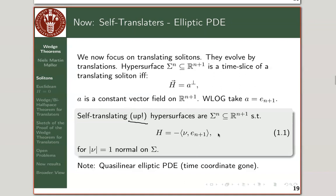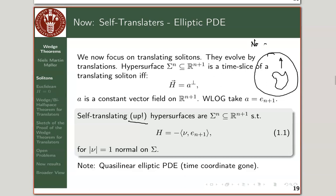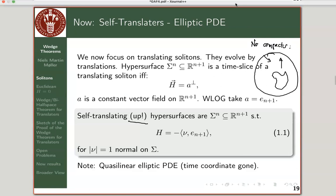A lot of the local theory is pretty well understood. What we'd like to look at is the global geometry of solutions — complete hypersurfaces satisfying this equation. It's not hard to see you cannot have any compact examples of self-translating hypersurfaces. To show this, take your compact supposed self-translator, put a sphere around it, and use the avoidance principle — it would have to translate out of the sphere, which is shrinking. That leads to a contradiction.